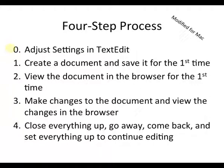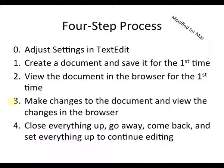So now we have adjusted our settings in TextEdit. Step one was to create a document and save it for the first time. Step two, we viewed the document in the browser for the first time. Step three, we made changes to the document and viewed those changes in the browser, going back and forth between the browser and TextEdit to make changes and view them. Now it's time to close everything up, go away, come back, and set everything back up to continue editing — that will be step four.